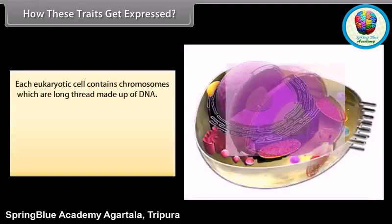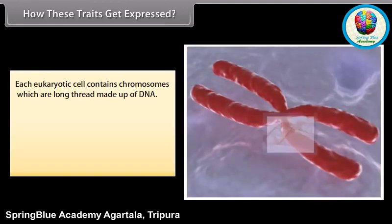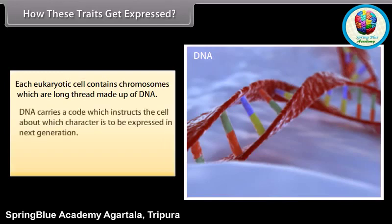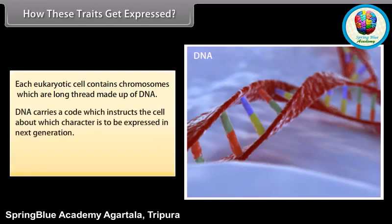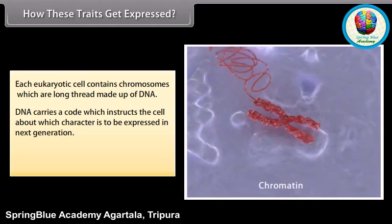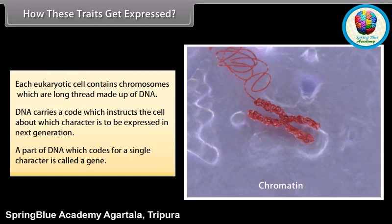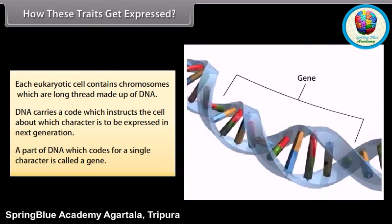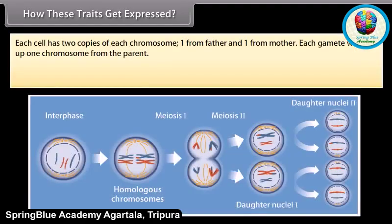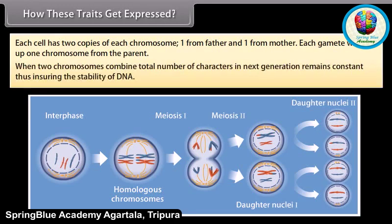How these traits get expressed. Each eukaryotic cell contains chromosomes, which are long threads made up of DNA. DNA carries a code which instructs the cell about which character is to be expressed in the next generation. A part of DNA which codes for a single character is called a gene. Each cell has two copies of each chromosome — one from father and one from mother. Each gamete will take up one chromosome from the parent. When two chromosomes combine, the total number of characters in the next generation remains constant, thus ensuring the stability of DNA.